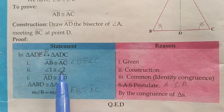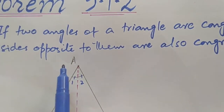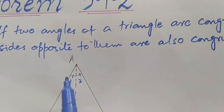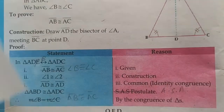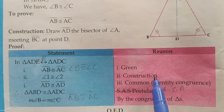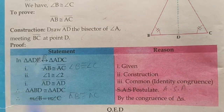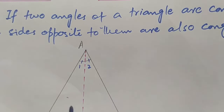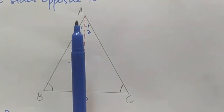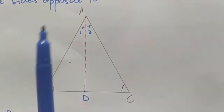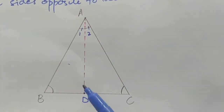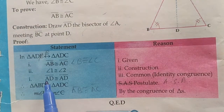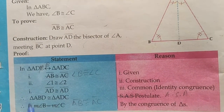The third statement is: AD is congruent to AD. The reason is identity congruence, meaning one side is equal to itself. So AD is the common side shared by both triangles ADB and ADC, and it is equal to itself.